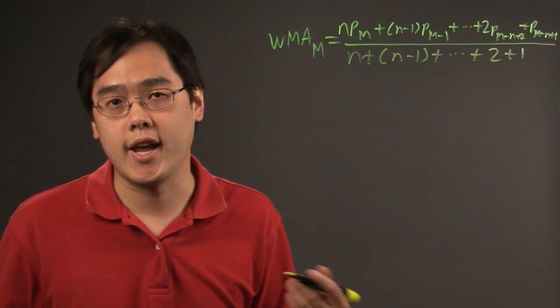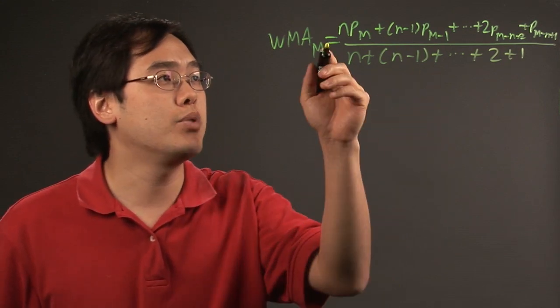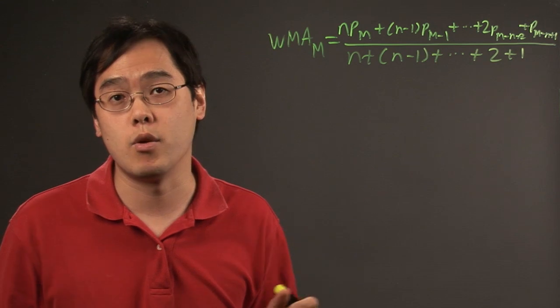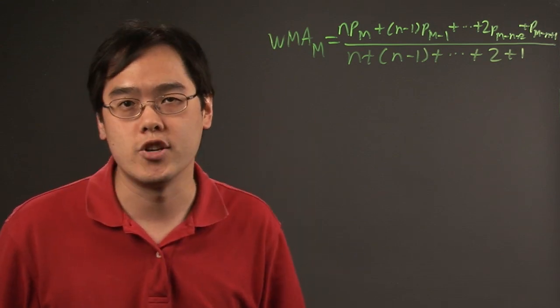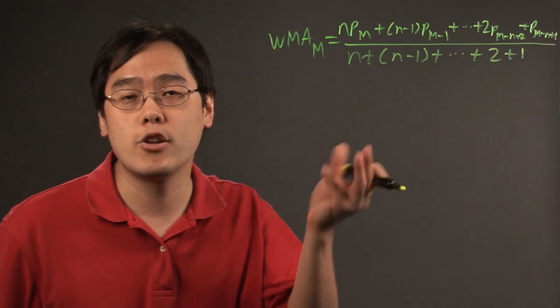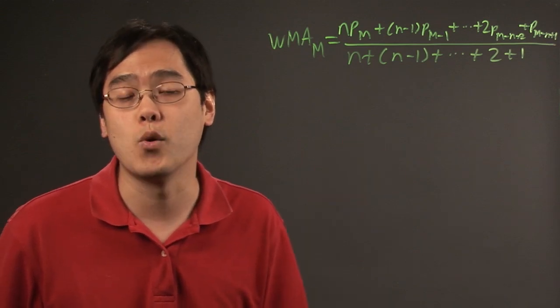The denominator will end up being a triangular number, but the bottom line is when you plug in the different data values and their corresponding weights, you should be good to go in finding the weighted moving average. I'm Jimmy Chang, and that's how to find a weighted moving average.